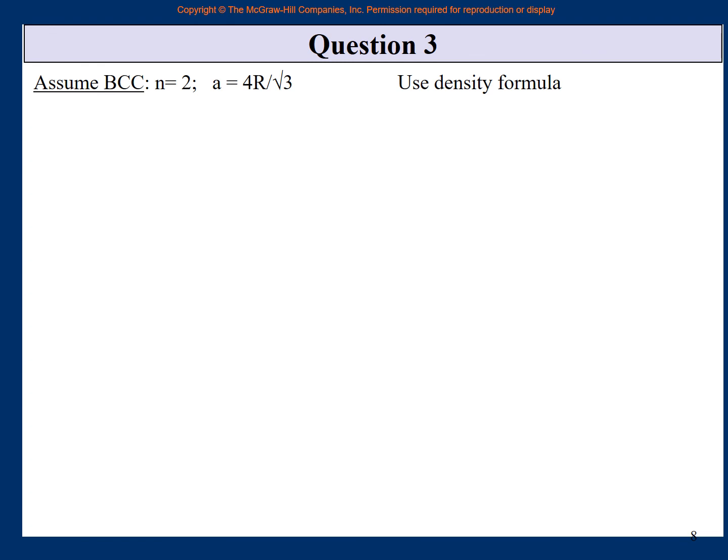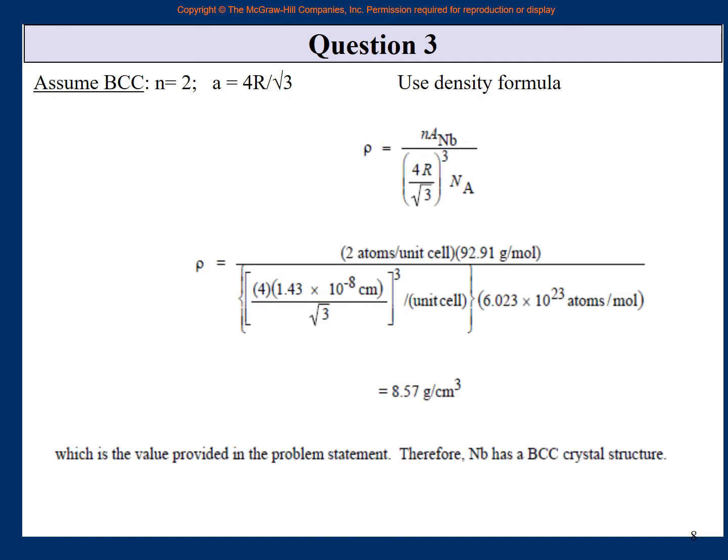Next, if you assume that niobium is BCC, then we know that number of equivalent atoms is 2. This time A is equal to 4R upon root 3. And again, you use the density formula. So the density formula is again the same. But instead of A, you have 4R upon root 3 this time. And N is now 2. You just substitute everything. Again, remember that you put the value in centimeter rather than nanometer. And this time it is 8.57 gram per cubic centimeter, which is almost exactly the value that was given in the problem statement. So therefore, you conclude that niobium has a BCC crystal structure.